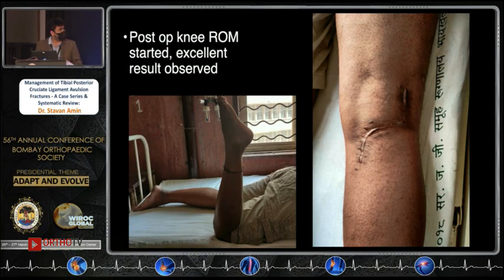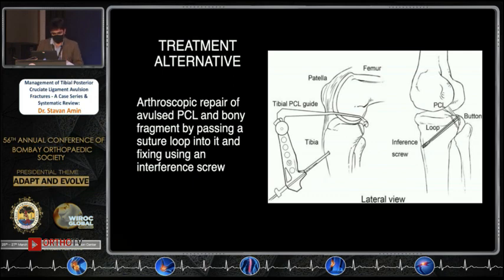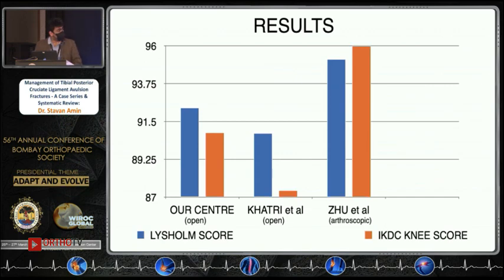Knee range of motion was started directly post-op. These are the three-month post-op ROM photos. As a treatment alternative, arthroscopic fixation uses a PCL jig to fix the fragment, and some surgeons use an interference screw to fix the sutures.